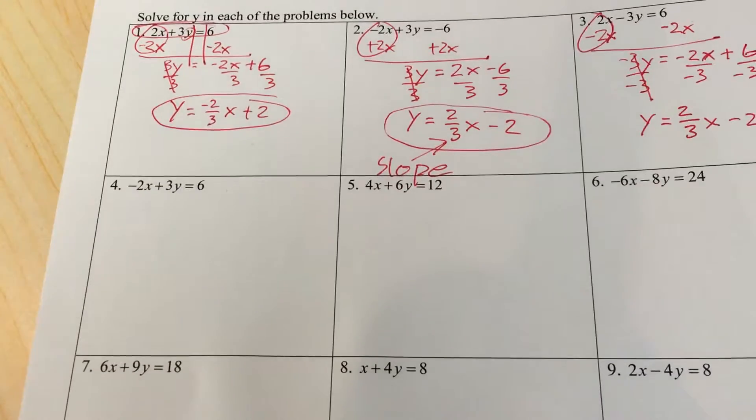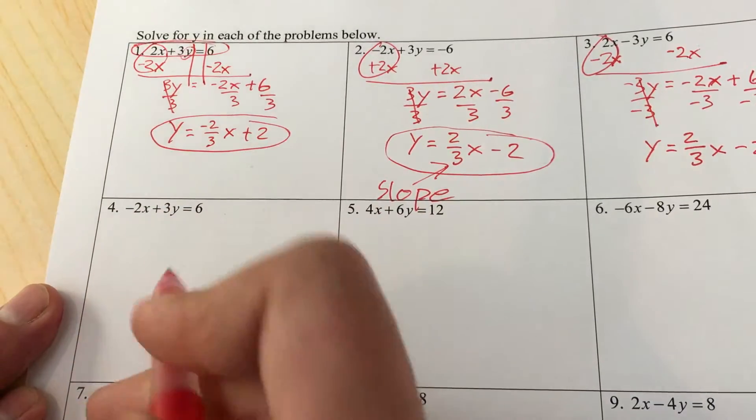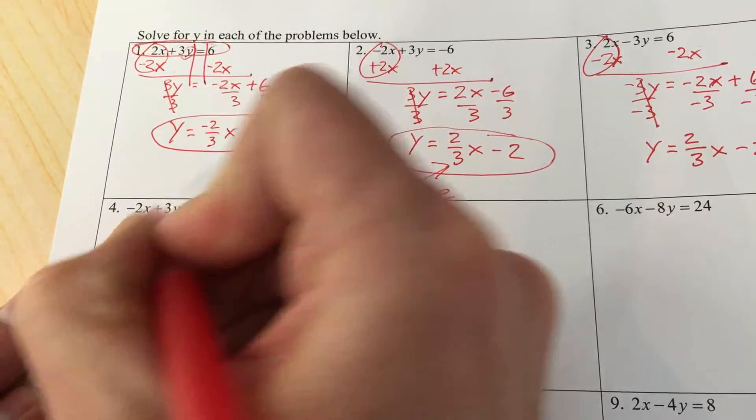Our last one of the video, and then you guys are on your own for the rest. We have a -2 here, so to make a zero we're going to add the opposite, which is positive 2x. Do not forget the x. Add 2x and we've got 3y equals 2x plus 6.